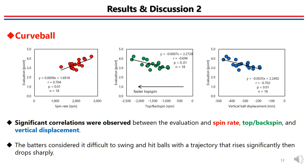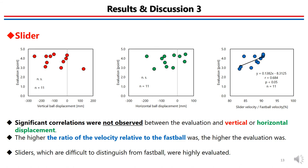For curveballs, significant correlations were observed between the catcher's evaluation and the spin rate, top and back spin, and vertical displacement of the pitched ball. Balls with greater topspin that dropped more sharply were highly evaluated. In most cases during a game, pitchers throw a curveball to upset the batter's timing and obtain a strike. Therefore, batters find it difficult to swing at balls with a trajectory that rises significantly then drops sharply, because the batters are forced to change the direction of their eyes, thereby upsetting their timing.